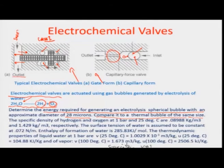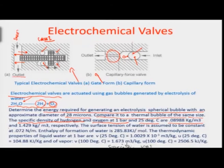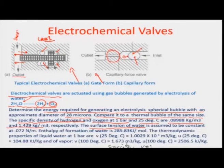Parameters given include: specific densities of hydrogen and oxygen at 1 bar and 25°C (STP conditions) — 0.08988 kg/m³ and 1.429 kg/m³ respectively. Surface tension of water is 0.072 N/m. It is important to calculate the pressure difference that must be sustained by the bubble — between inside and outside the bubble — and we will design on that basis.